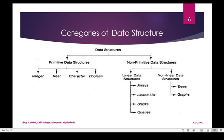That is how we organize the data. We use integer data, real values, character, and boolean. Boolean represents 0 or 1. This is called a basic or primitive data type. The non-primitive data structure is called non-primitive, and it is classified as linear and non-linear.